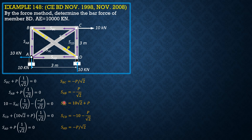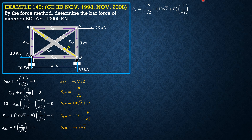Now because there are only two members that have these constants — remember that P is invented, therefore the partial derivative of most members will be 0. So when we tabulate, let's check at A: summation forces X. S_AD is −P/√2, plus S_AC which is 10√2 + P times 1/√2, then minus 10. If you check, that's 0.